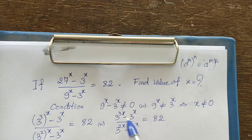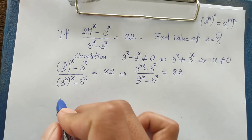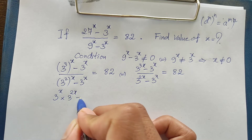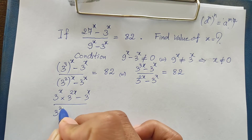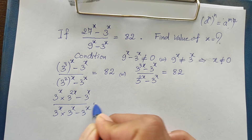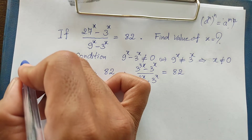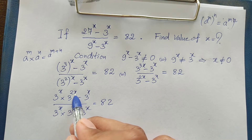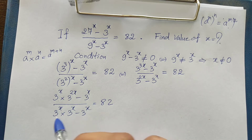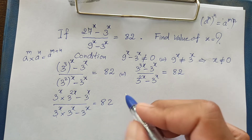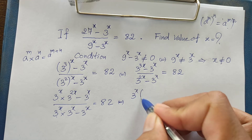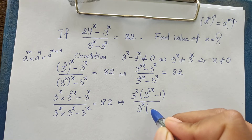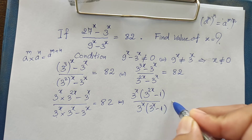We can write the numerator as 3 to the power h times 3 to the power 2h, minus 3 to the power h, over 3 to the power h times 3 to the power h, minus 3 to the power h, equals 82. Using the rule a to the power m times a to the power n equals a to the power m plus n. We then factor out 3 to the power h from numerator and denominator, giving 3 to the power h times (3 to the 2h minus 1), over 3 to the power h times (3 to the power h minus 1), equals 82.